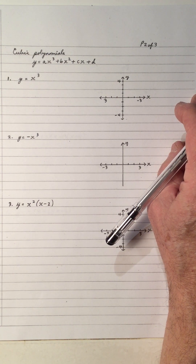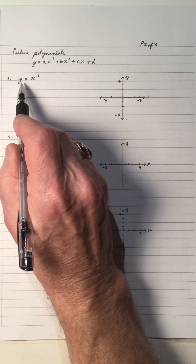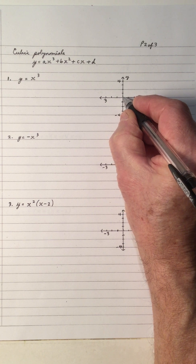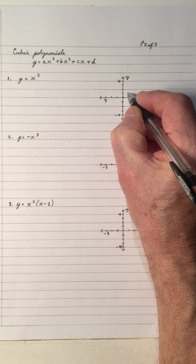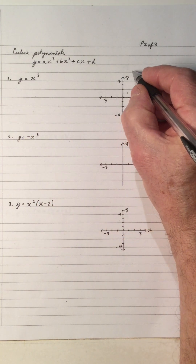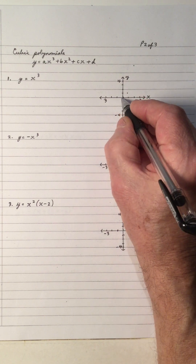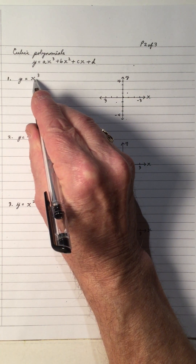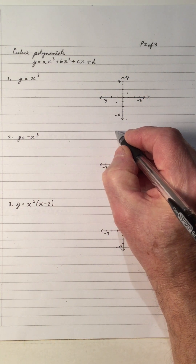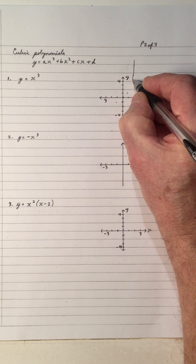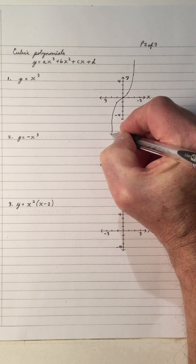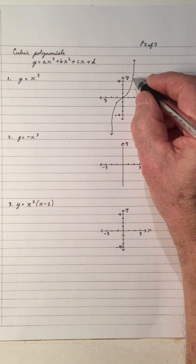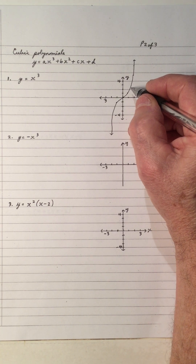Let's look at the graph of y equals x cubed. When x is 0, y is 0. When x is 1, y is 1. When x is 2, y is 8. On the other side: x is negative 1, negative 1 cubed is negative 1. And negative 2 cubed is negative 8. So it's a mirror image, one side on the other. This cubic function comes in like a sideways S, and notice that it's reflected in the origin — this side is reflected in negative x and negative y.